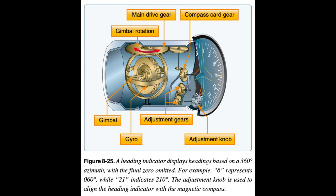The operation of the heading indicator depends upon the principle of rigidity in space. The rotor turns in a vertical plane and fixed to the rotor is a compass card. Since the rotor remains rigid in space, the points on the card hold the same position in space relative to the vertical plane of the gyro. The aircraft actually rotates around the rotating gyro, not the other way around. As the instrument case and the aircraft revolve around the vertical axis of the gyro, the card provides clear and accurate heading information. Because of precession caused by friction, the heading indicator creeps or drifts from its set position.